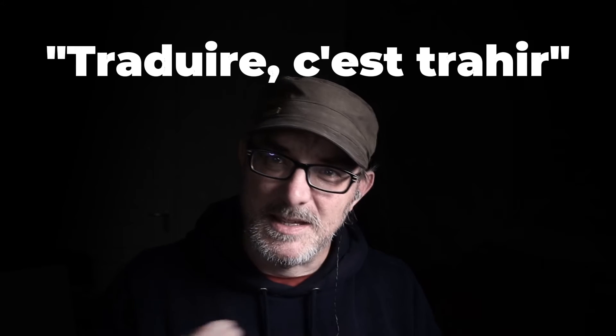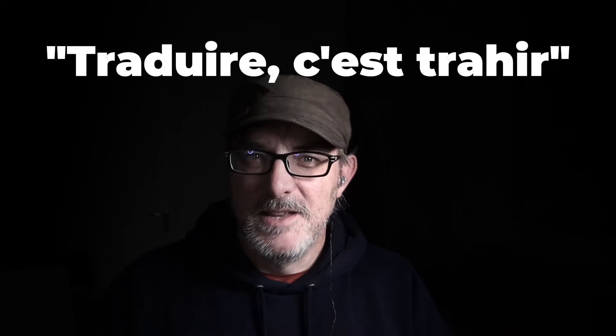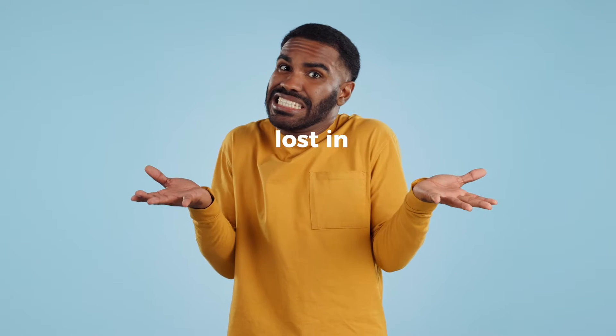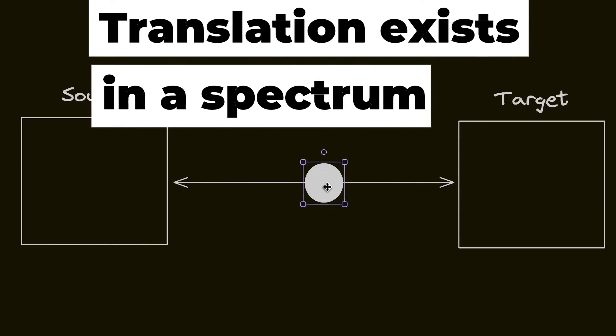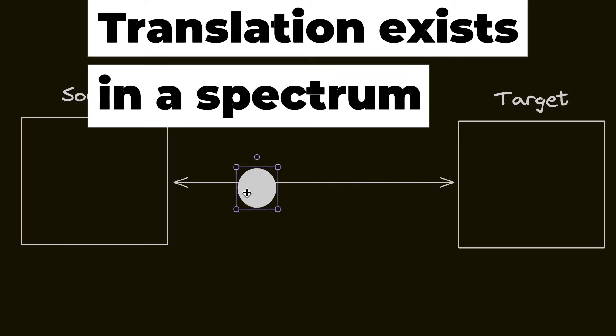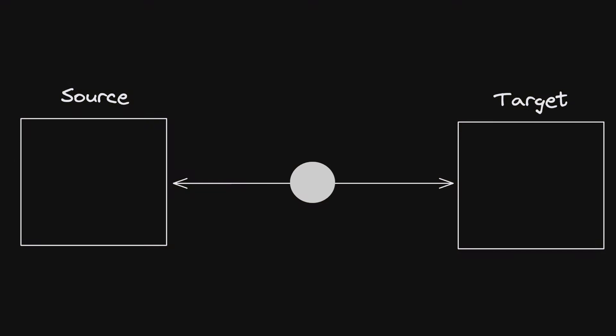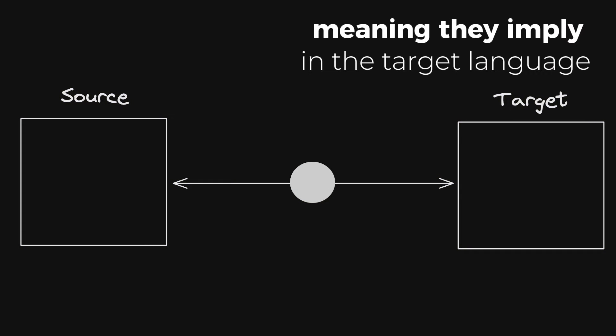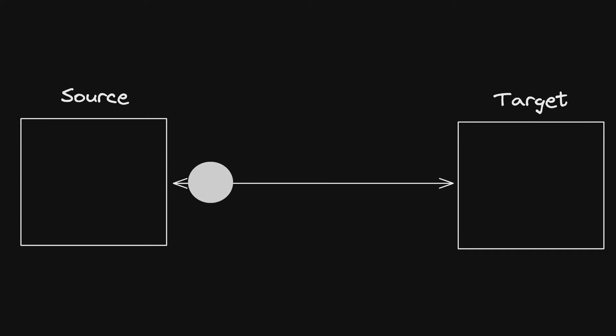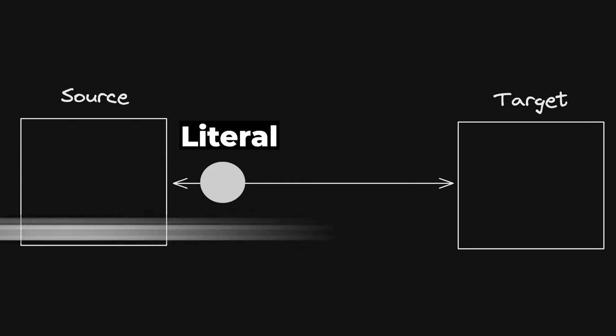Now, there's a saying in French — traduire c'est trahir — to translate is to betray. Shortly put, something is necessarily lost in translation. Translation exists in a spectrum, depending on how close you want to be to the words in the source material or the meaning they imply in the target language — a spectrum between literal and idiomatic.